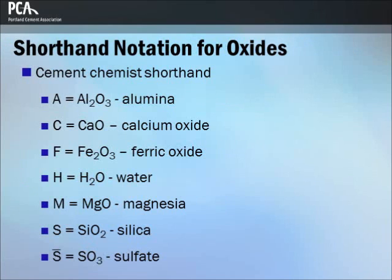Cement chemists use shorthand notations for common cement chemistry oxides, all in capital letters: A for alumina, C for calcium oxide, F for ferric oxide, H for water, M for magnesia, S for silica, and S-bar for sulfate.